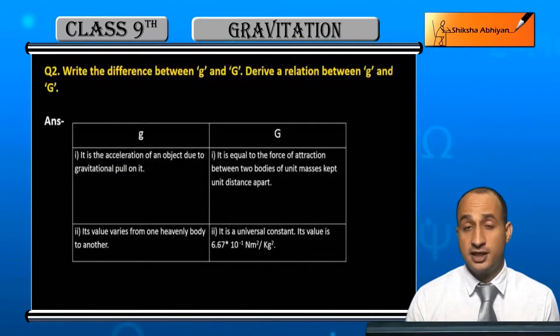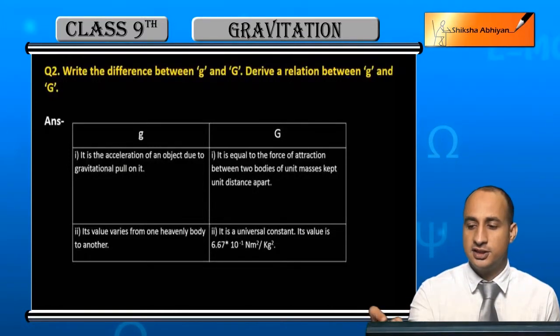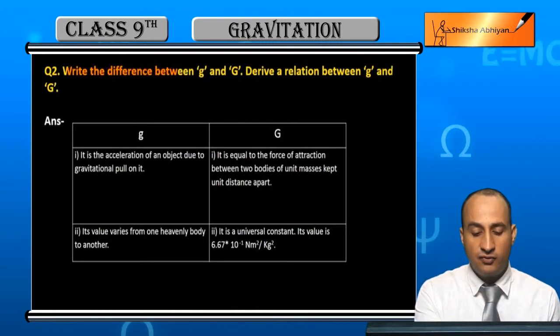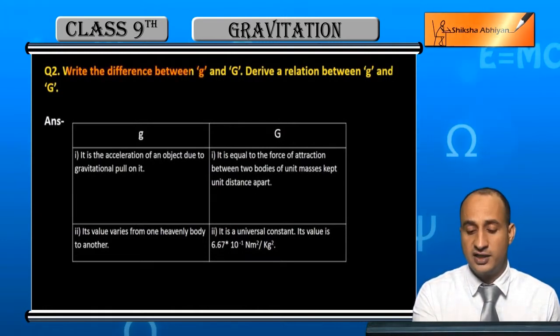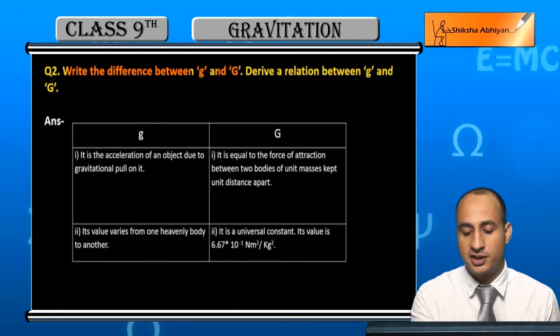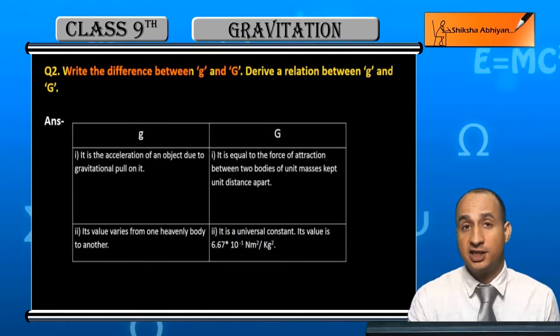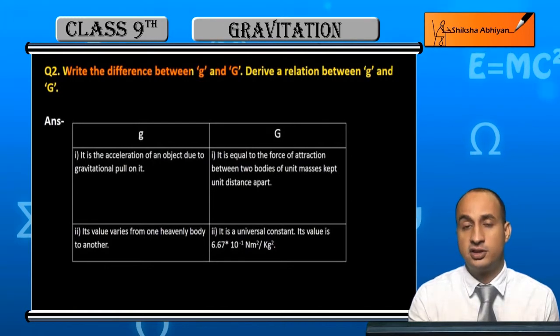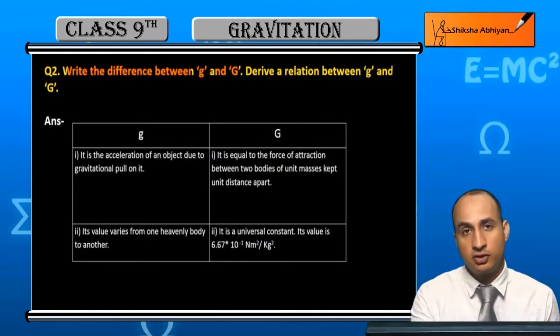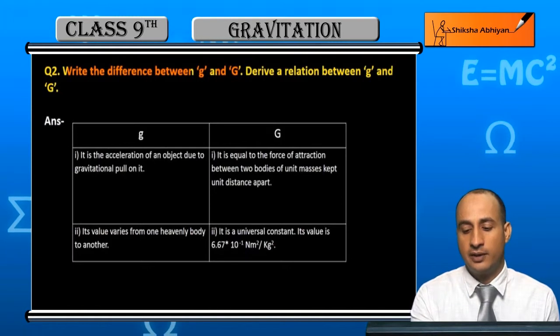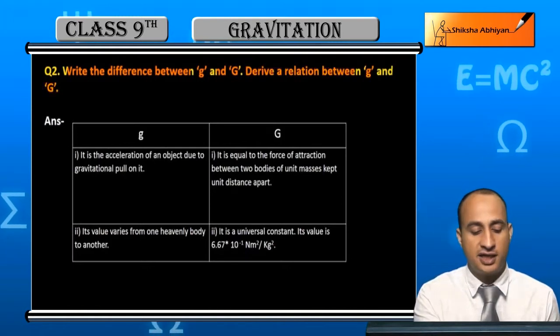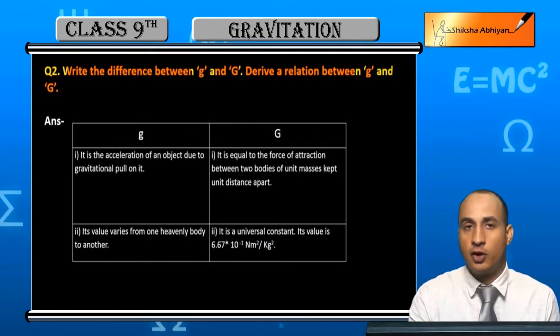Now students, see question 2. Write the difference between small g and capital G. Small g is acceleration due to gravity and capital G is gravitational constant. We have to derive a relation between small g and capital G. First of all, I will tell you the differences between them.